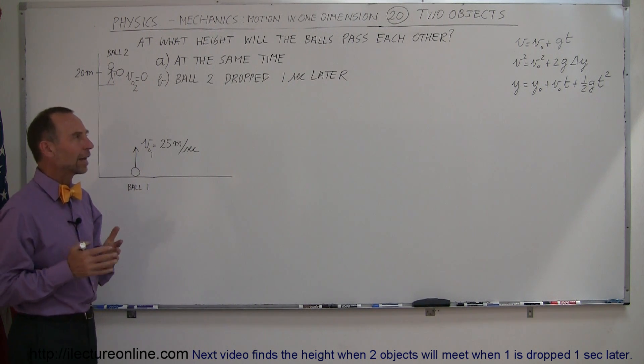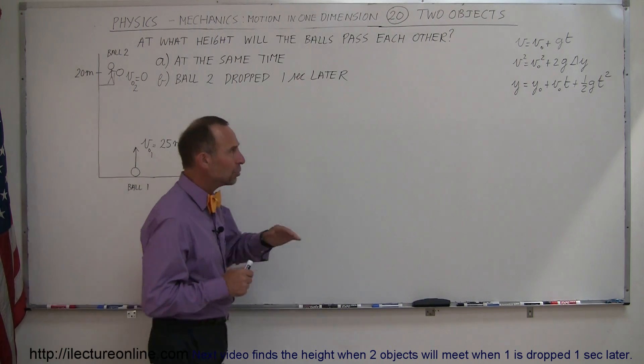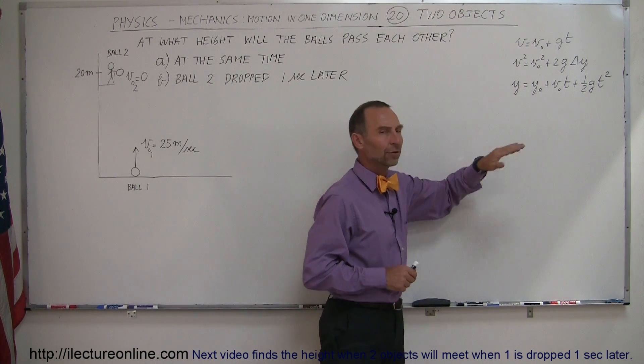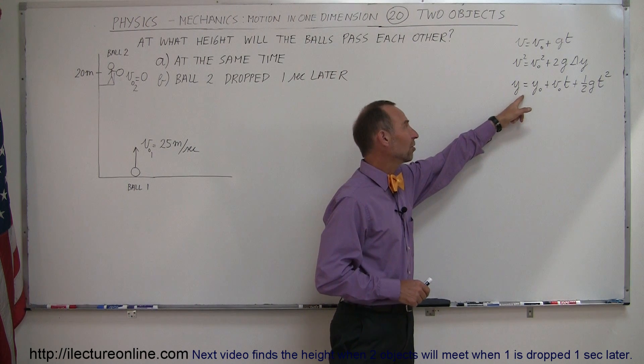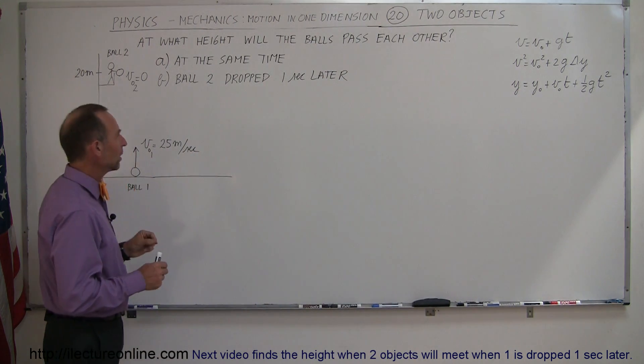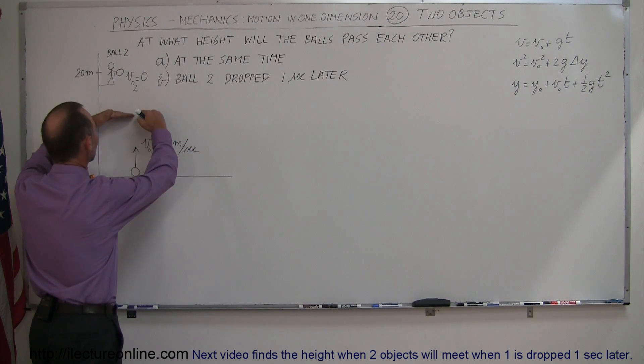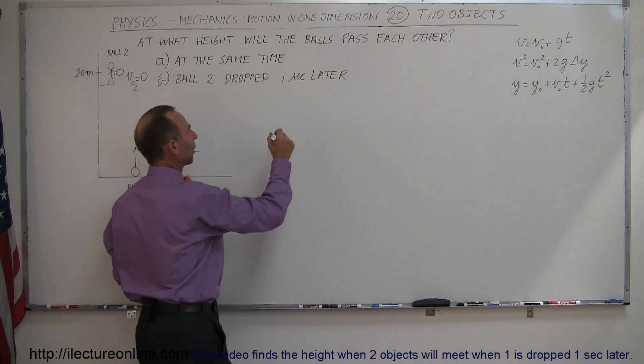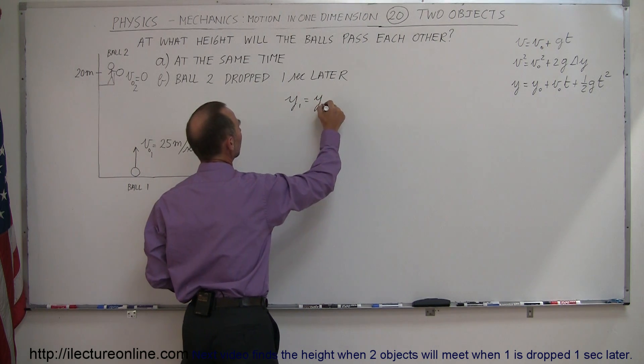So, the way you want to do that is you probably want to go ahead and use this equation right here of kinematics, because this equation tells you what the height is as a function of time. And assuming that, of course, they will be at the same height when they meet, we can say at that point that y1 will equal y2.